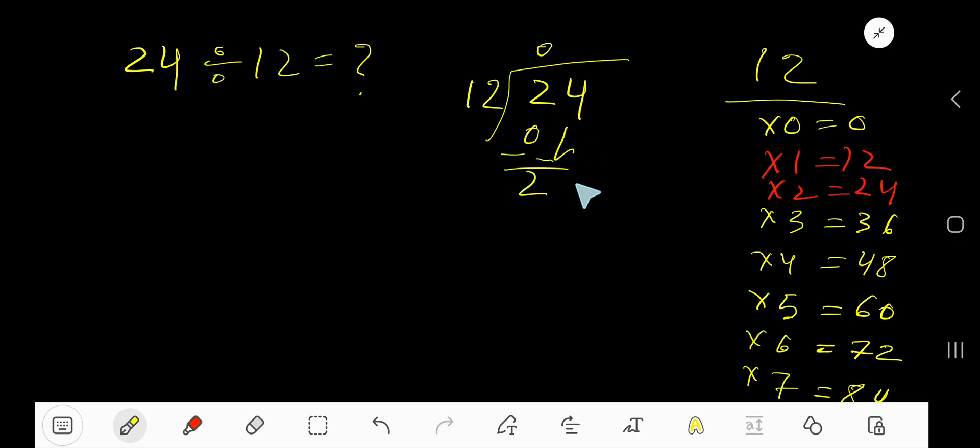12 goes into 24 how many times? 2 times. 2 times 12 equals 24. Let me confirm by multiplying 12 by 2.